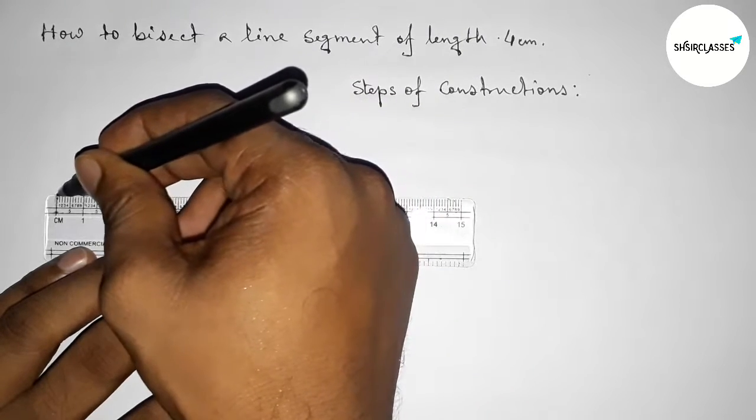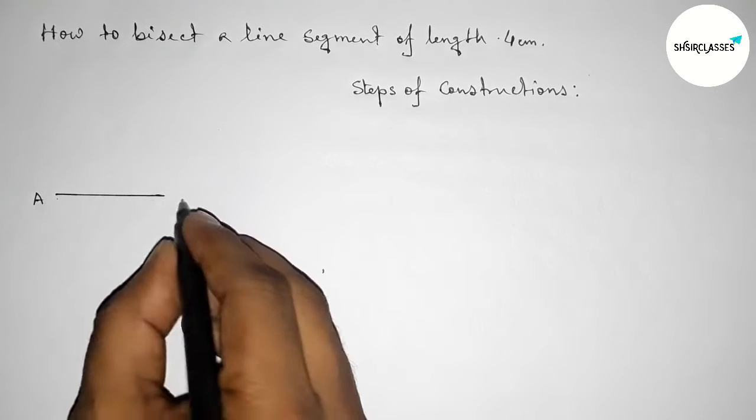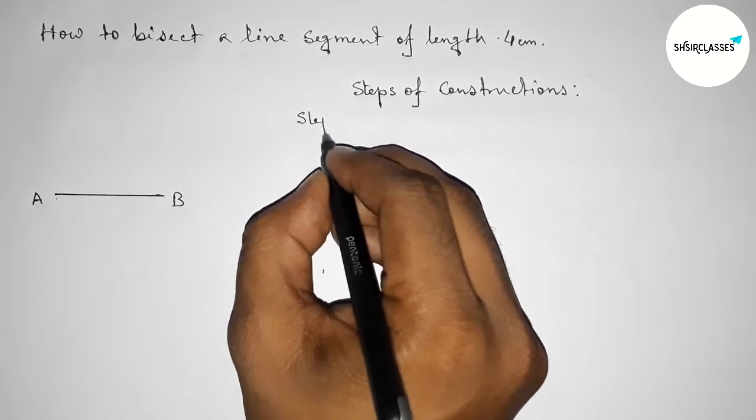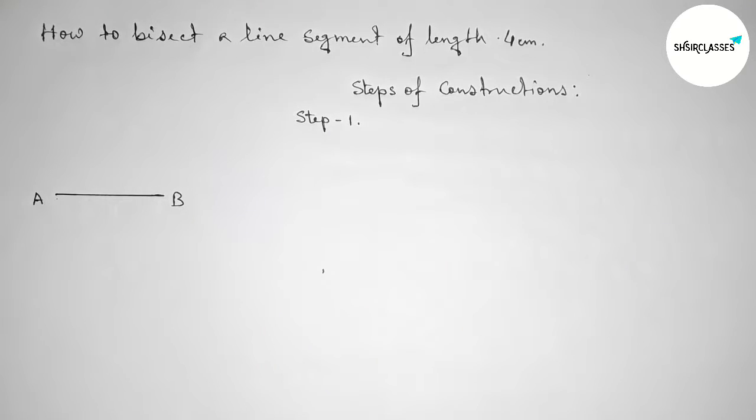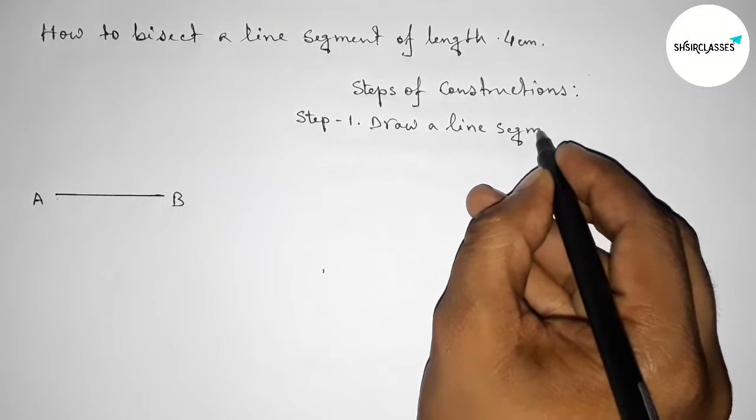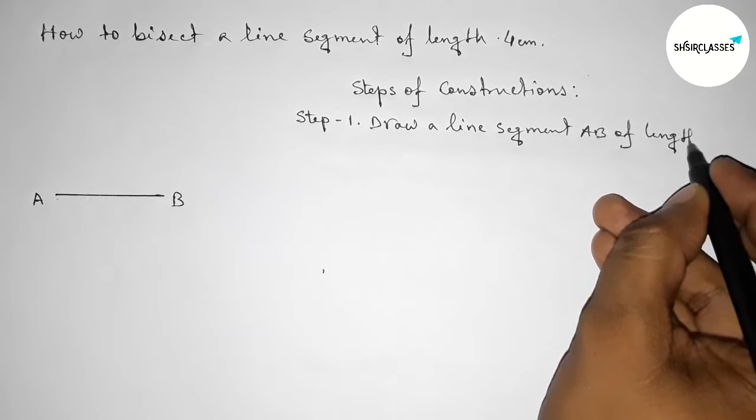4. So first drawing here a line of length 4 centimeter and taking here point A and here B. So AB equals to 4 centimeter. So step number one: first draw a line segment AB of length 4